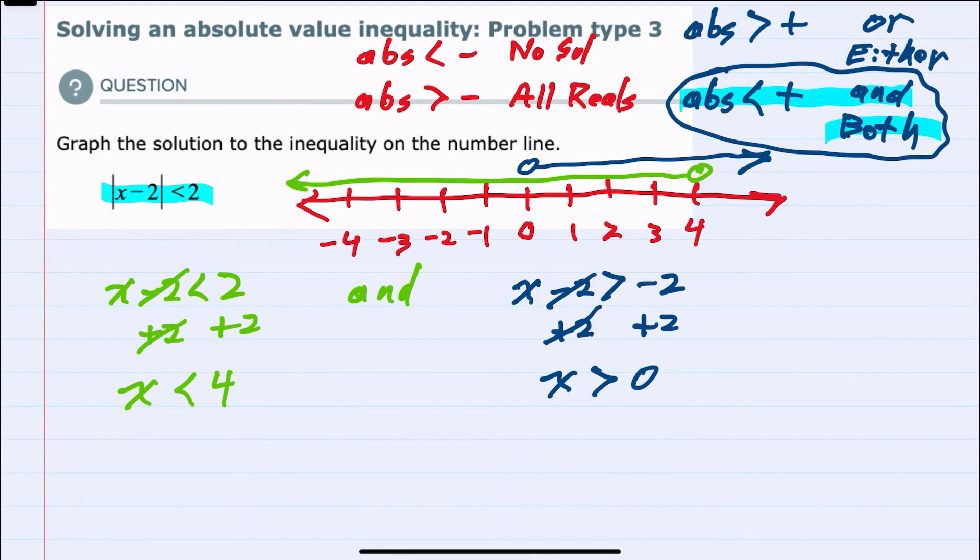Since we're looking for where these two overlap, our final solution would be everywhere between 0 and 4, not including 0 and 4. So our graph would look like this.